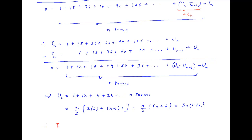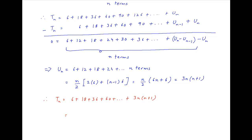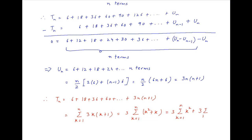Now Un is the nth term of the series for Tn. Therefore Tn is equal to 6 plus 18 plus 36 plus 60 plus and so on, and the nth term is 3n times n plus 1. Therefore Tn is equal to the summation k going from 1 to n of 3k times k plus 1, which is equal to 3 times the summation of k squared plus k, which equals 3 times the summation of k squared plus 3 times the summation of k.